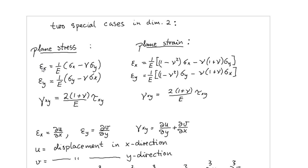The strain in the x-direction is the partial derivative of the displacement u in the x-direction with respect to x, and the strain in the y-direction is the partial derivative of the displacement v in the y-direction with respect to y. The shear strain gamma_xy is defined as the partial derivative of u with respect to y plus the partial derivative of v with respect to x.